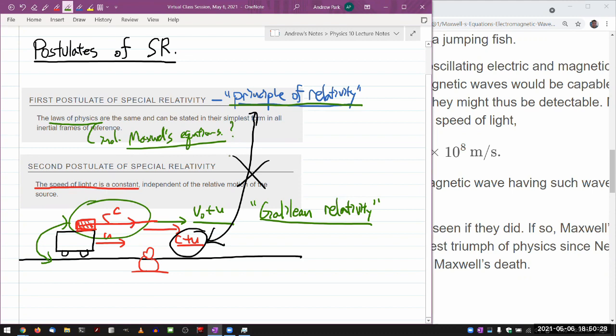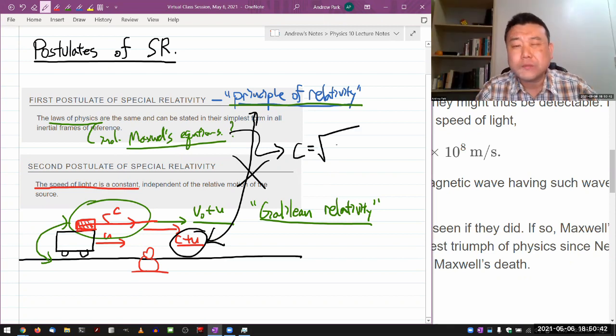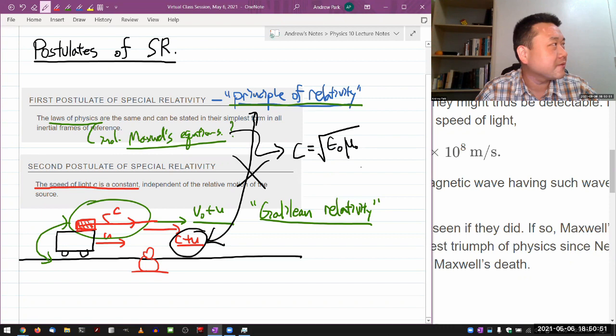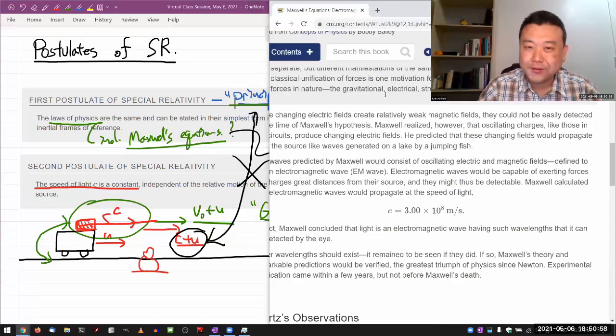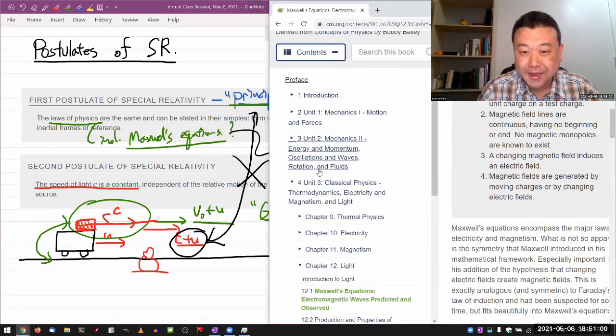And since through Maxwell's equations, there's the prediction that speed of light should be, there's an actually analytical expression for it. I think it's square root of epsilon knot, mu knot. I think that's right. Let me just double check to be sure so that I don't leave in my lecture something that's actually incorrect.